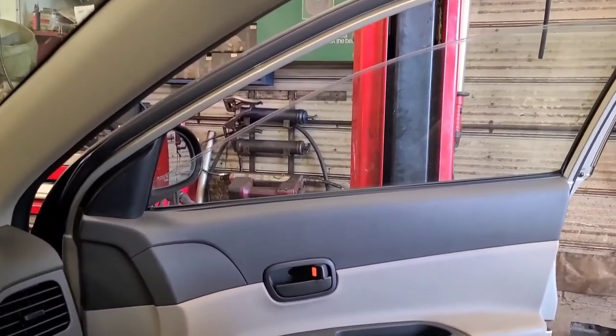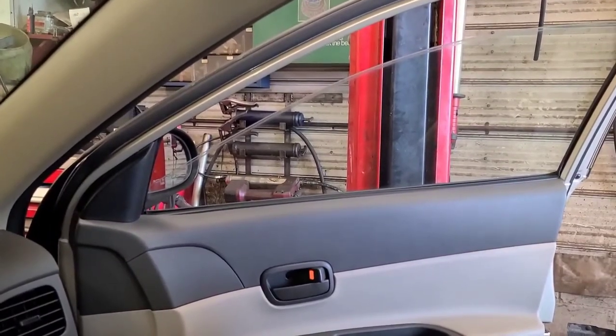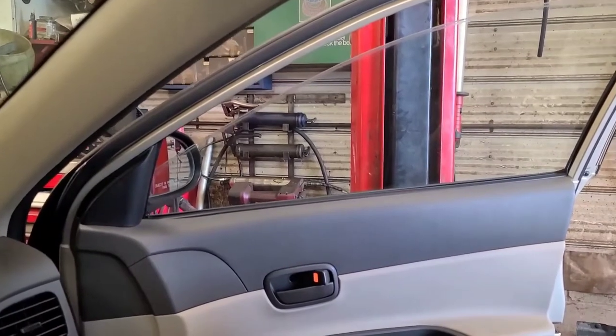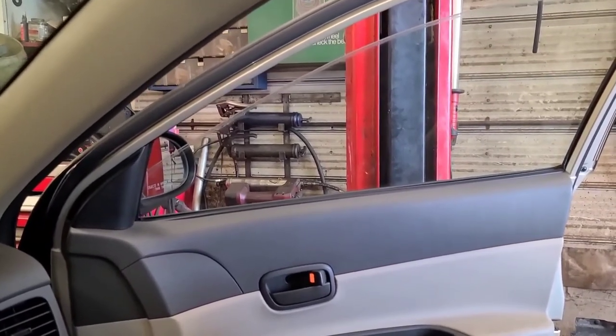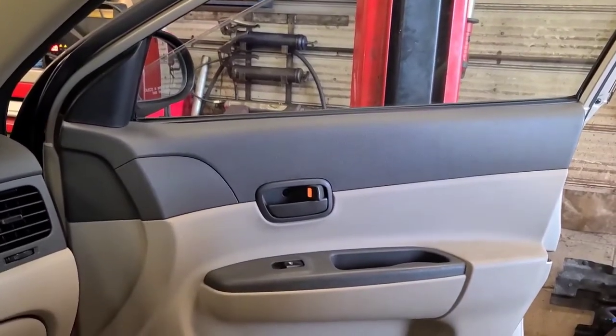If I try to roll it down from the driver's side, nothing happens. If I try to roll it up, you can see it will go up. But it did roll down at one point. It doesn't work from the passenger switch either, up or down. It goes up but not down.